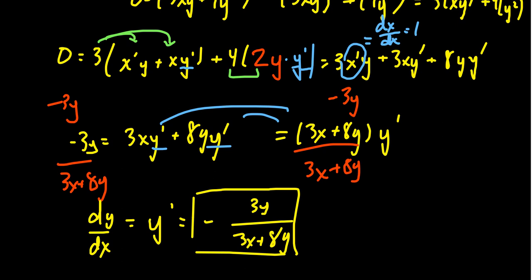Now, because we didn't solve for y explicitly, you will notice that the derivative involves both x and y. That's perfectly fine with implicit differentiation. We're okay having the derivative be a function of both x and y.